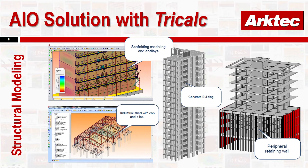Here we have more models: scaffolding, an industrial shed with carpet piles — a new type of structure — a tall concrete building with columns, beams, slabs, prefabricated slabs, and load-bearing walls. Also shown is a concrete structure with peripheral retaining walls, some walls with piles, and steel elements.